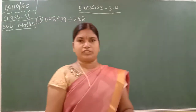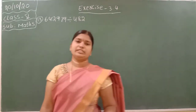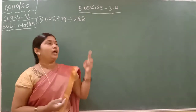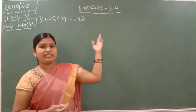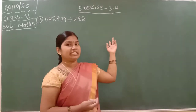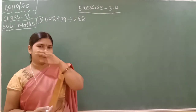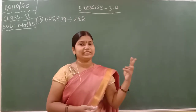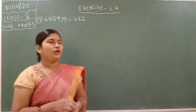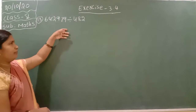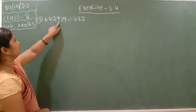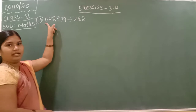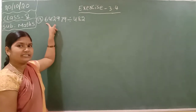Good morning children. Fifth class, my time today. Yesterday we discussed about divisions. Today we have to discuss about six-digit number division with three-digit divisor. Yesterday we checked under seven-digit number by two-digit divisor. Today they have given six-digit number — 1, 2, 3, 4, 5, 6 — means it is called a six-digit number.